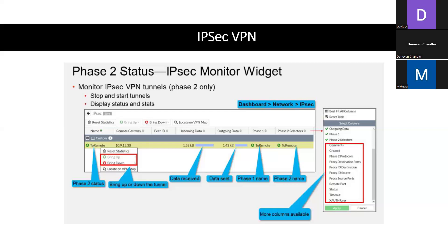The IPsec widget within the dashboard also shows the amount of data that traversed — ingress and egress — through the tunnel. When you click on the columns, it gives you a menu showing available columns: phase two protocols, proxy destination ports, proxy ID destination, status, timeout, Xauth user, comments, created, and more. You can enable all of these within the widget.